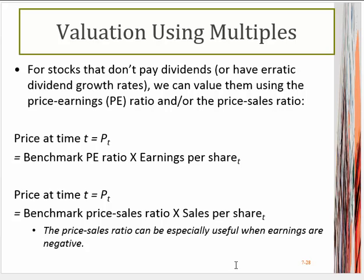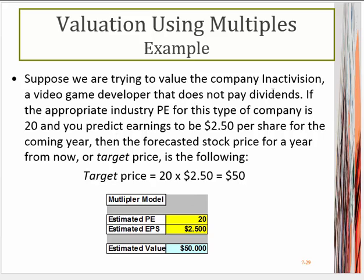We have these models that allow us to easily estimate values of stocks. Here we have a company that doesn't pay dividends. The industry P/E ratio is around 20 for the gaming industry, and you predict earnings of the company will be around $2.50 per share. What would be the forecasted price? Plugging into the multiplier model: 20 is the estimated P/E, $2.50 is the estimated earnings per share, so you would estimate the stock price would be worth roughly $50.